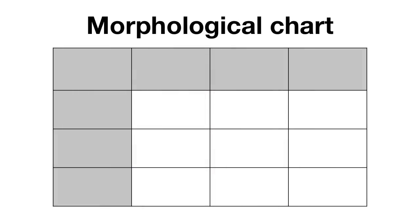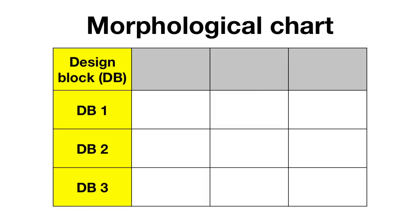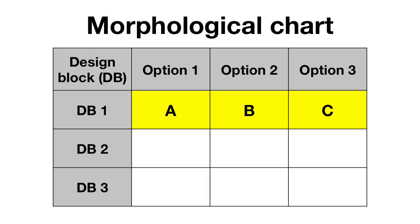For an example, you might have a design block of handles. You might have a design block of ways to create motion. These design blocks should be high level and reflect the major parts and functions of your expected solution. You'll make a table and list all of the design blocks or categories along the left-hand side. To fill in a morph chart, you list all of the ideas for a particular design block along that particular row.